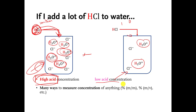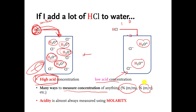In the previous videos we talked about concentration and there are many ways to measure it — percent by mass, percent mass over volume, etc. The way acid concentration is almost always measured is using the molarity method: number of moles of solute — in this case moles of acid — divided by the number of liters of solution. Acid concentration is almost always measured using molarity, but with a twist that's coming up.